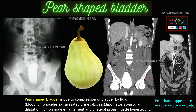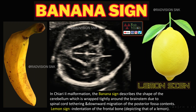Remember that pear-shaped appearance can also be seen in appendicular mucocele, where you can see a pear-shaped or drumstick appearance.